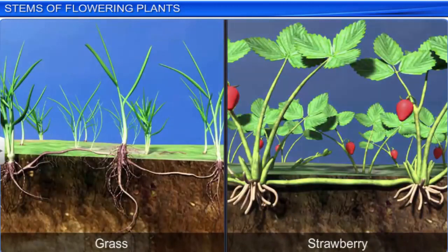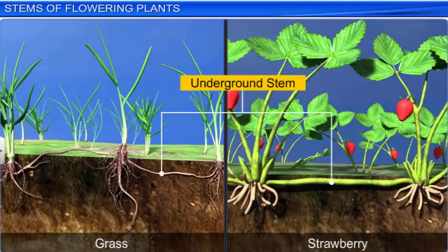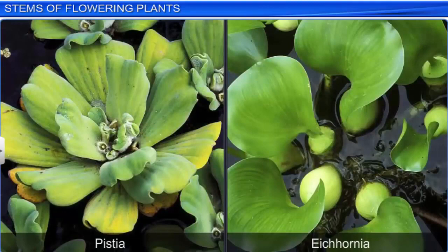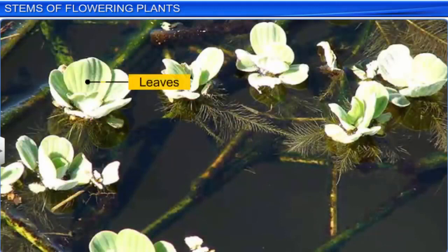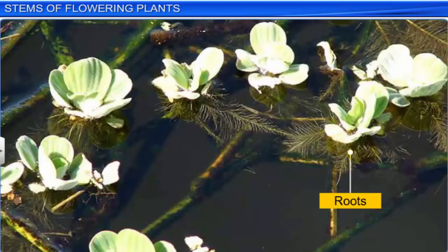In some plants like grass and strawberry, some stems get modified and grow underground. These underground stems spread to new niches and form new plants as the old ones die. Certain aquatic plants like Pistia also have modified stems with short internodes. The nodes of these plants have clusters of leaves and small bunches of hair-like roots, which help the plant to stay afloat.